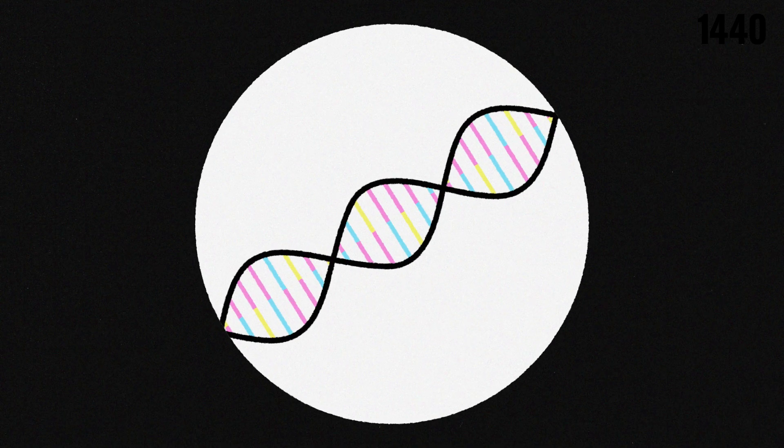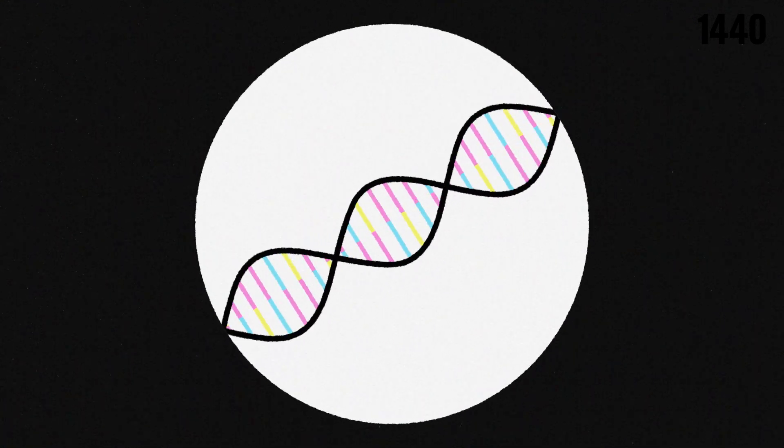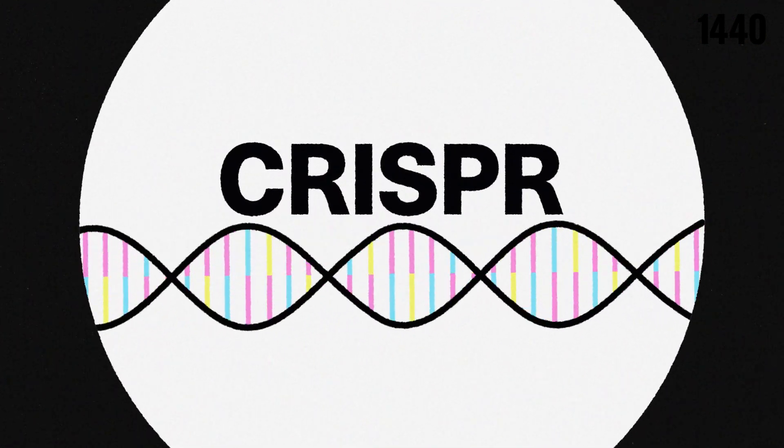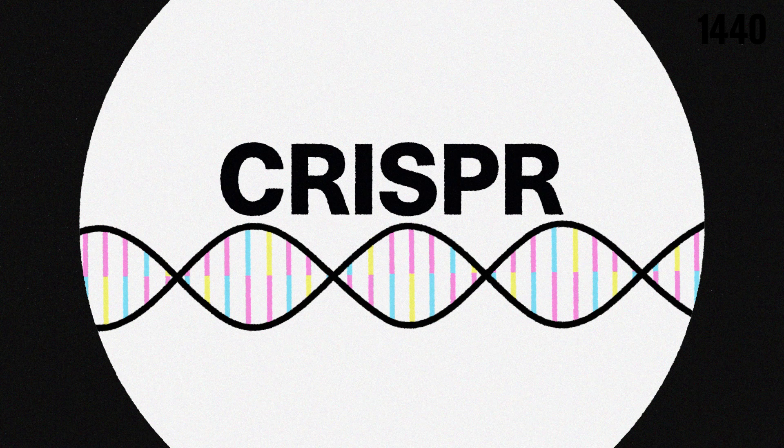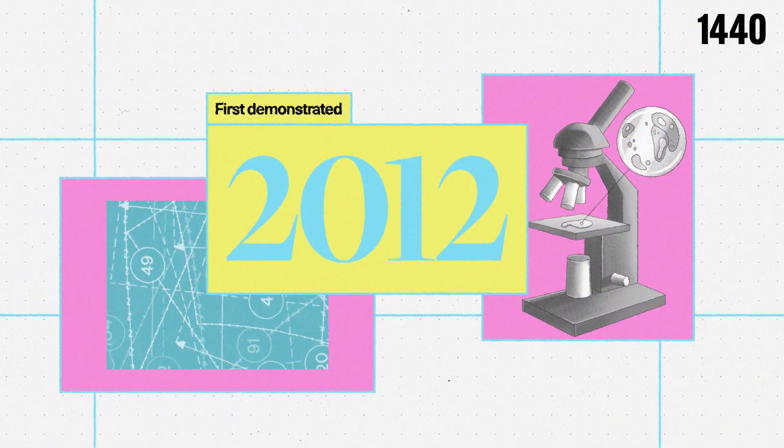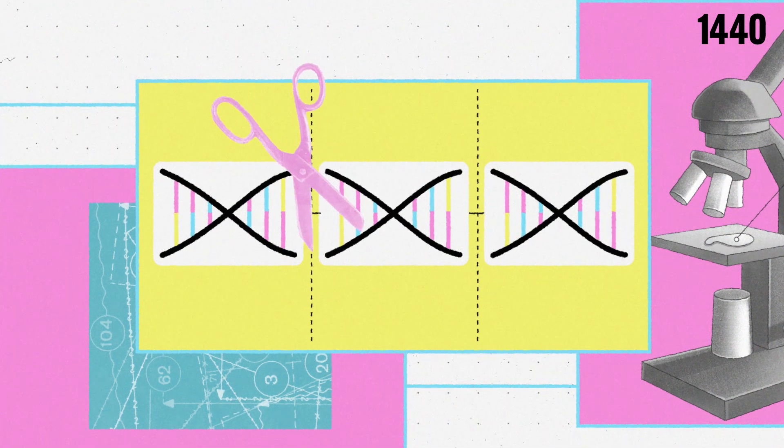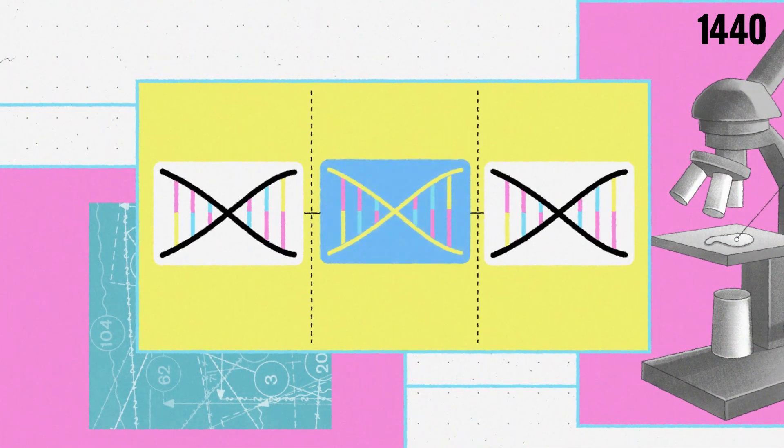Imagine having the power to fix our DNA and combat genetic disorders. That's what CRISPR offers, a revolutionary tool with immense potential. First demonstrated in 2012, CRISPR allows scientists to snip out faulty pieces of genetic code and replace them.